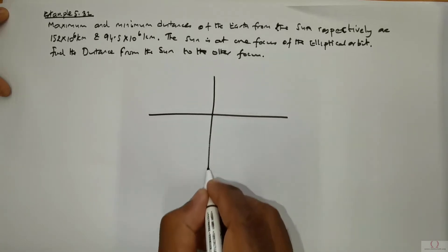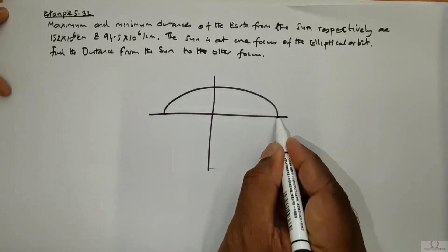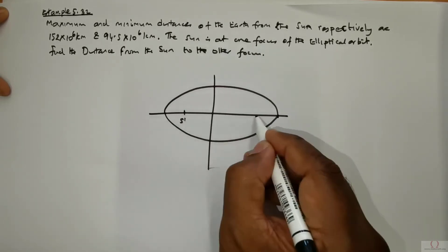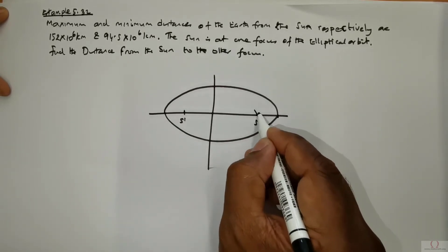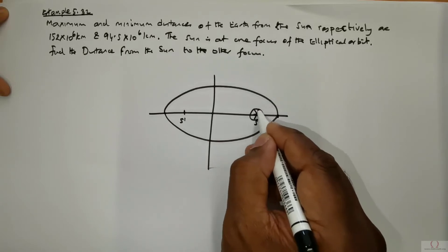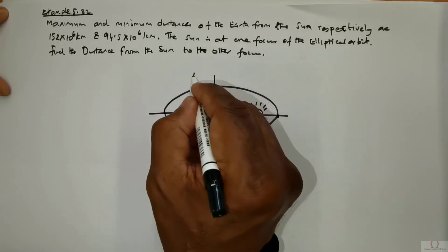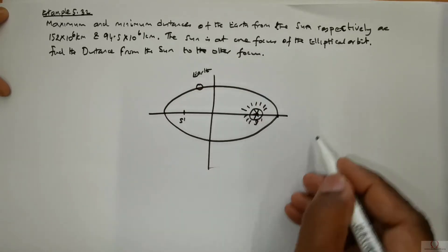So we know the ellipse has got two foci. We have the elliptical orbit and we got two foci. This is S dash and this is S. It is said that the sun is at one focus. Of course the earth is somewhere over there. You can take it anywhere you want.